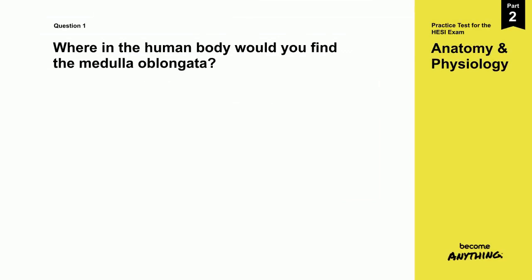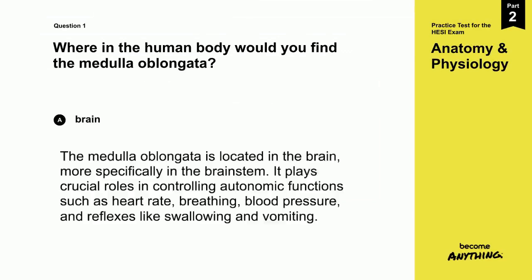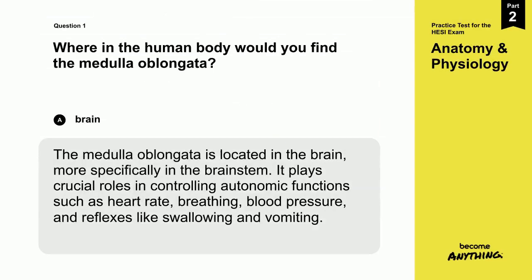The correct answer is A. Brain. The medulla oblongata is located in the brain, more specifically in the brain stem. It plays crucial roles in controlling autonomic functions such as heart rate, breathing, blood pressure, and reflexes like swallowing and vomiting.